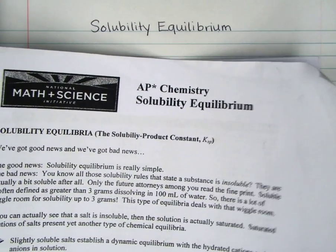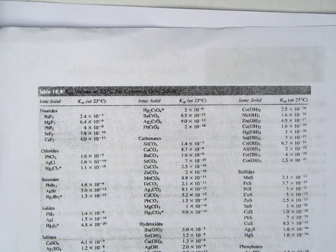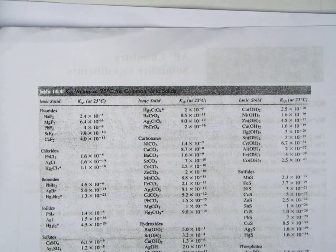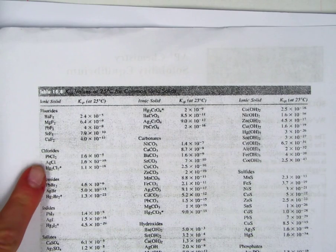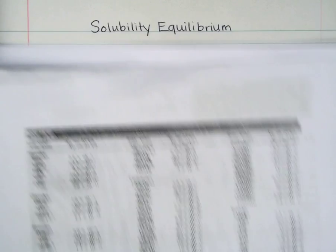So you have a table of KSP values and it's in this packet. It's titled AP Chemistry Solubility Equilibrium. If you flip it over, there are a whole bunch of KSP. So when I look at this, the one for silver chloride, it's right here. I'm not quite sure if you can even read that well, but it's 1.6 times 10 to the negative 10.